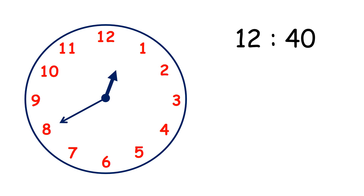Now the minute hand is on the 8 and 8 times 5 is 40, so we have 40 minutes — the time is 12:40. Now the time is 12:45. How else can we say 12:45? We can say that it's a quarter to 1, because in a quarter of an hour it will be 1 o'clock.